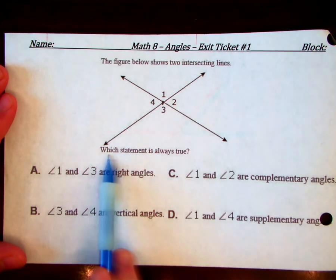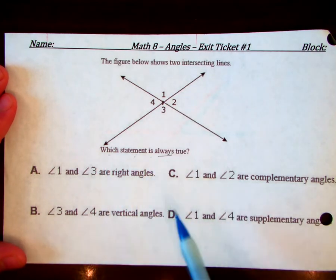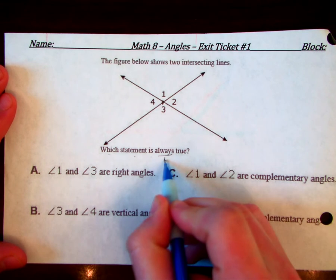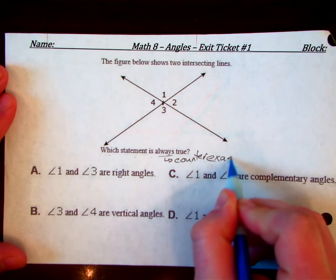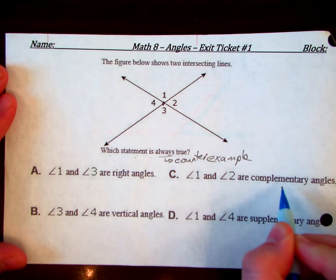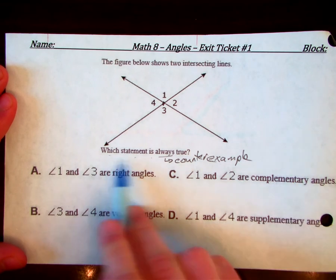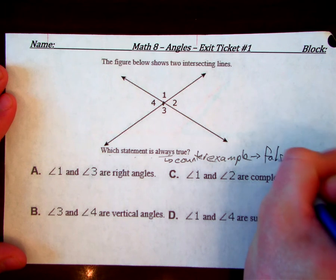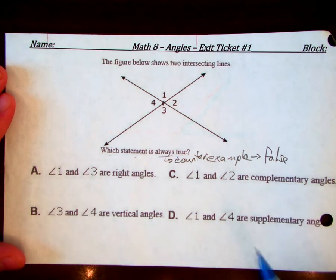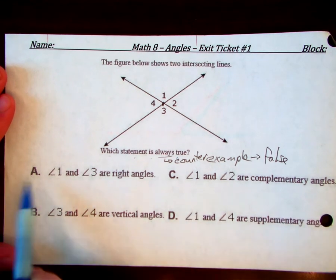And so it says which statement is always true. And so that means that if you can come up with a counter example, if you can come up with a counter example that makes it false, we know it's not a true answer. So let's just go through these.